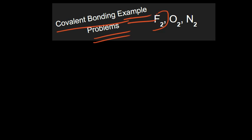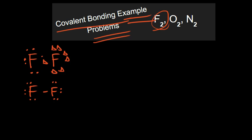Fluorine gas is going to be our first example — that's F₂. We can start by drawing the Lewis dot structures for fluorine gas, which is F₂. If we just assume to start with we've got single bonds all around, that's sometimes going to work for us and sometimes it won't. In this case, it does work for us. These are three different ways of writing this fluorine molecule where you have two fluorine atoms bonded to each other.